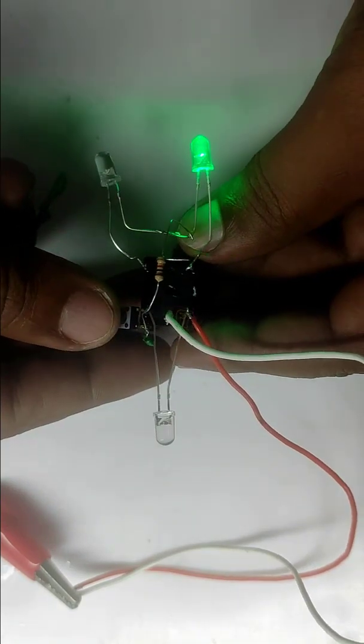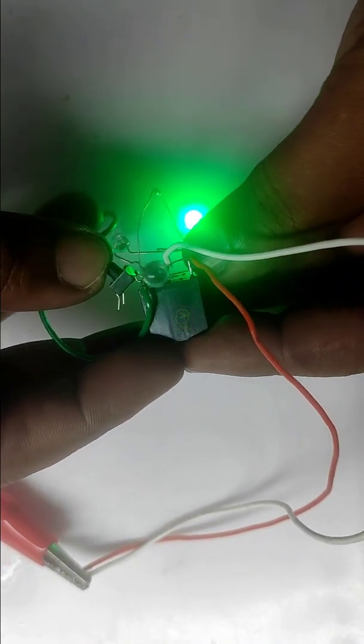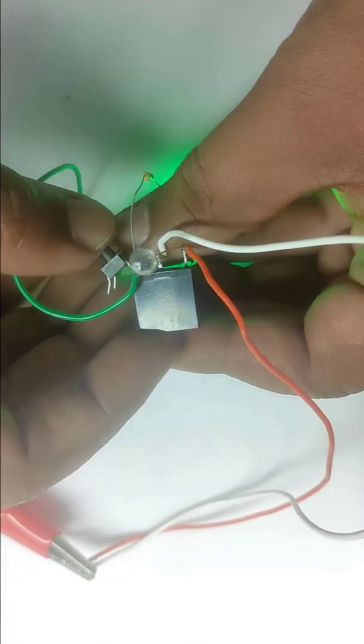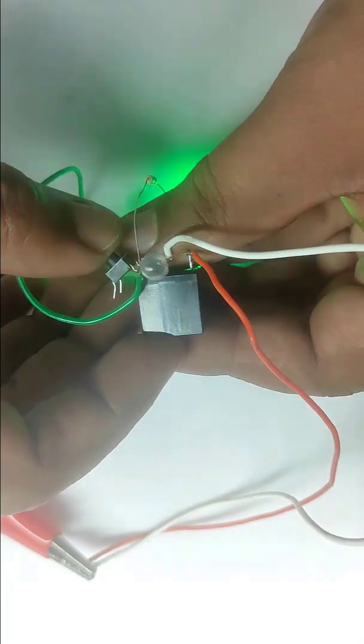Now when I am triggering, you cannot see anything, but if I am turning the LED towards you, then you can see the orange LED flashing when I am triggering the micro switch. This is because of the back EMF generated from the relay coil.